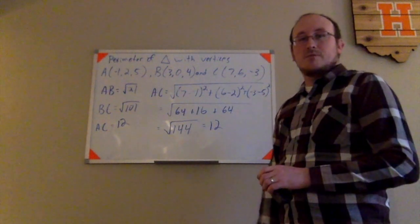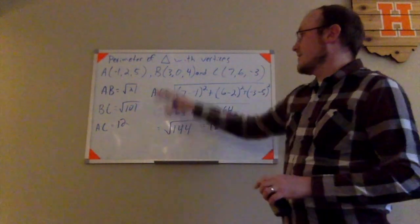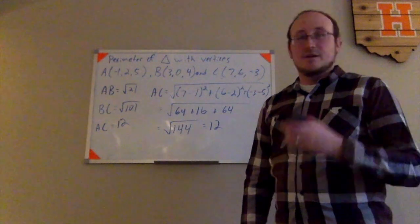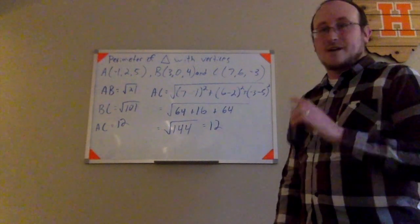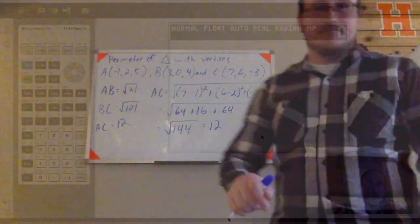So now if I want to find the perimeter and round to the nearest hundredth, I need to go to my calculator. I need to go ahead and add all these up and round it to two decimal places. And I'll know the perimeter of this triangle accurately, accurate to the nearest hundredth.